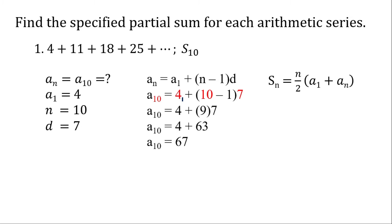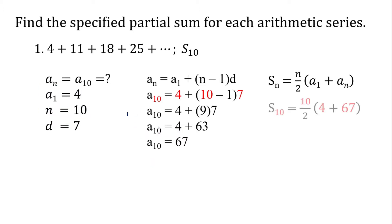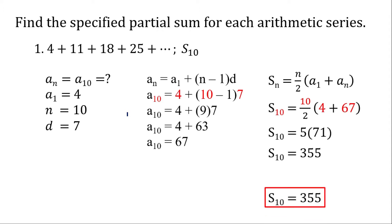Now we will use the arithmetic series formula. We have our first term a sub 1, our n, and our last term a sub n. The value of n is 10, first term is 4, last term is 67. So 10 divided by 2 is 5, then 4 plus 67 is 71, and 71 multiplied by 5 is 335. That's the sum of the first 10 terms.